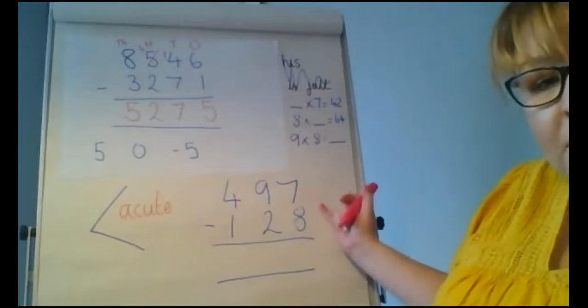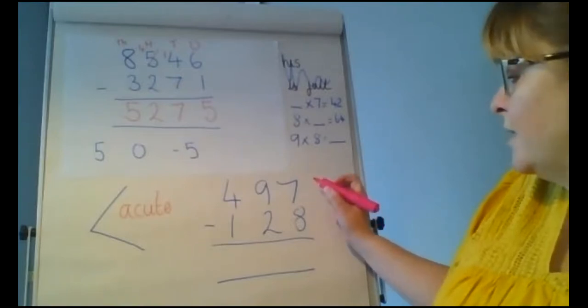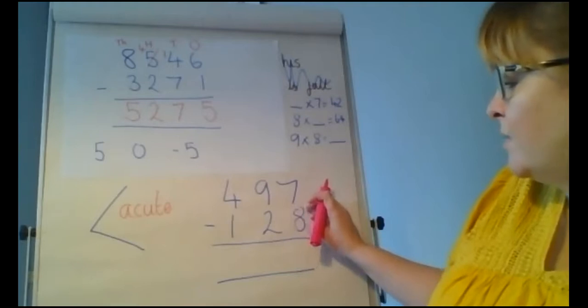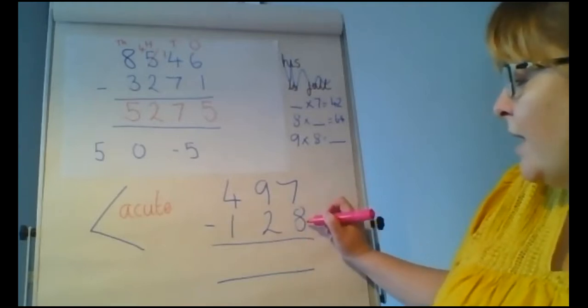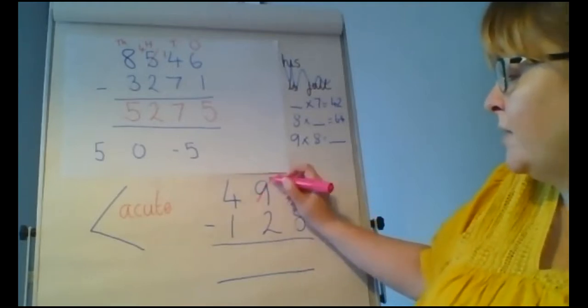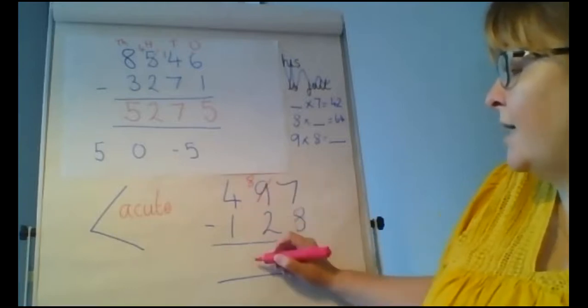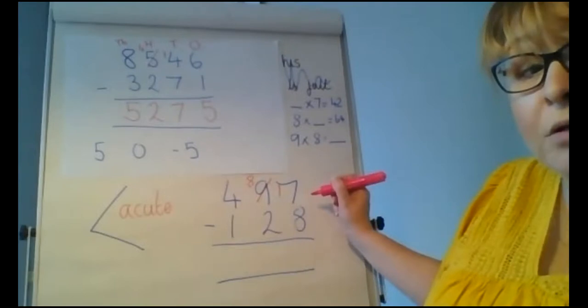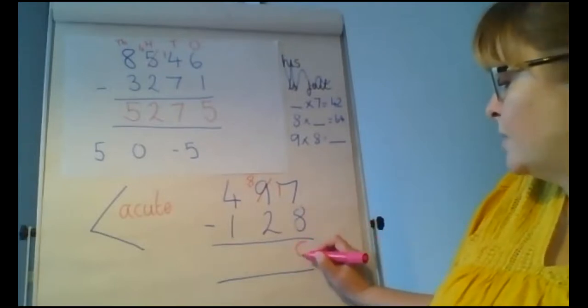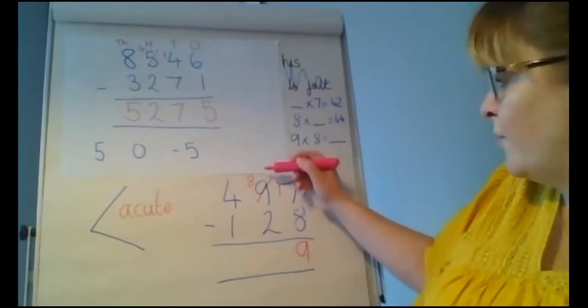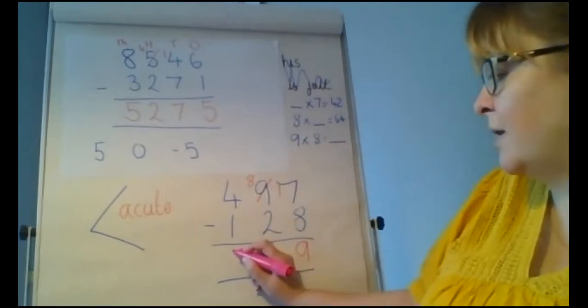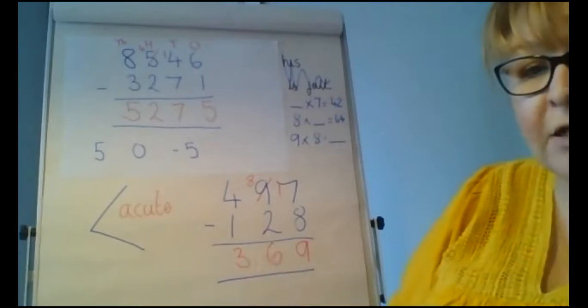Then the third one said decrease 497 by 128. Well, that means take away. So again, this one's nice and straightforward, because we can see that it's just the ones column that we need to do an exchange in. So 7 take away 8 we can't do. So we decrease the 9 down to 8, pass it over. So we've now got 17 ones take away 8 ones to leave us with 9. We've got 8 tens take away 2 tens and 400s take away 300. So we're on 369.